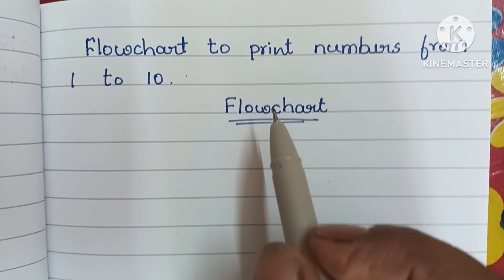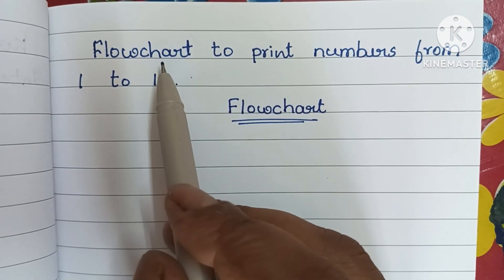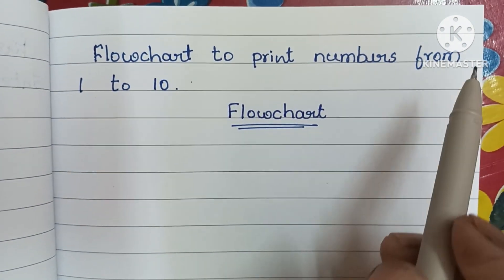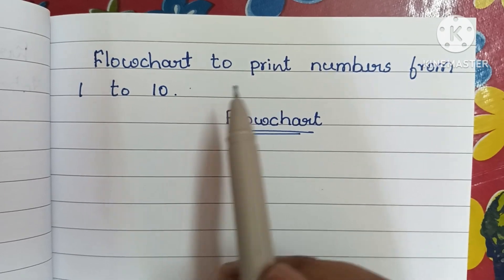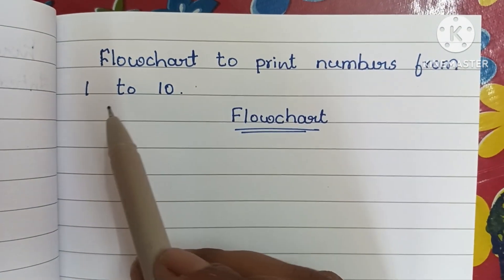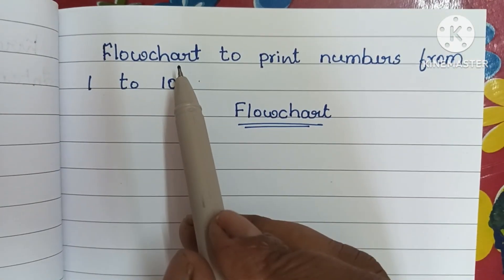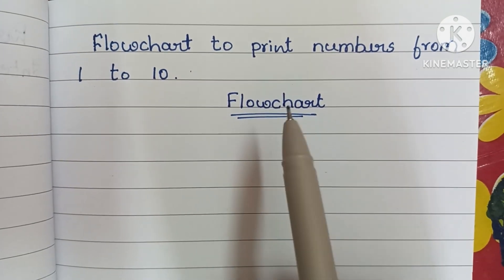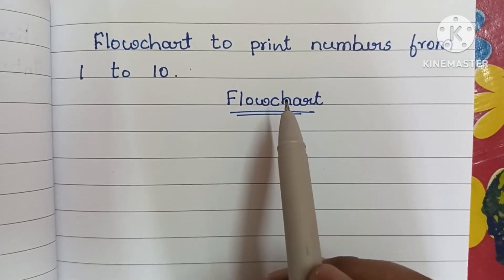In this video we are going to learn how to draw a flowchart to print numbers from 1 to 10. Here we have to print numbers from 1 to 10 using a flowchart. A flowchart is a graphical representation of a solved problem.